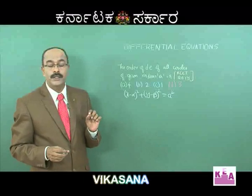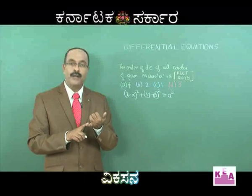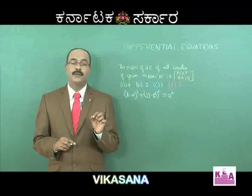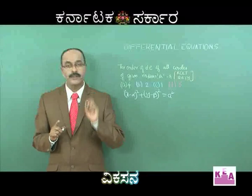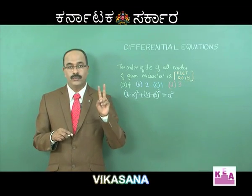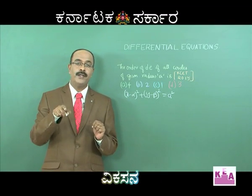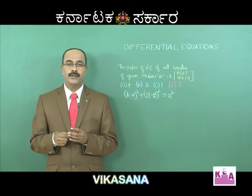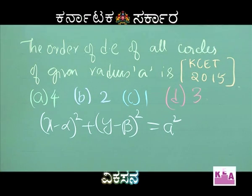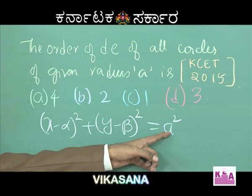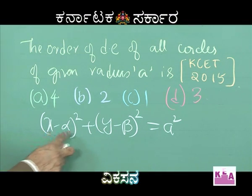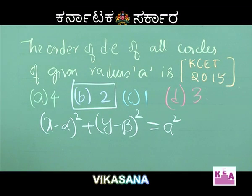Here α, β, and a are parameters. If radius is fixed, α and β are variable — two arbitrary constants — giving a second order differential equation. If α and β are fixed and a is variable, you get a first order differential equation. For all circles of a given radius a, α and β are variable — two arbitrary constants — so it is second order. Option B is correct.